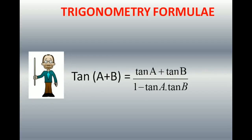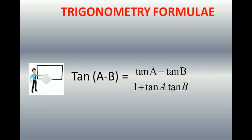The formula of tan is very easy to remember. Tan(A+B) is (tan A + tan B) / (1 − tan A·tan B). Very simple. Same way, tan(A−B) is (tan A − tan B) / (1 + tan A·tan B).